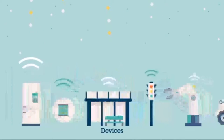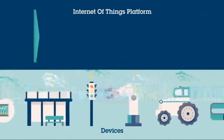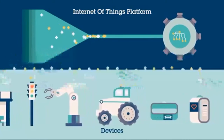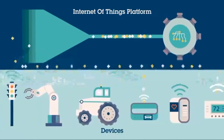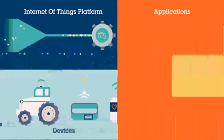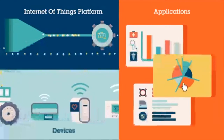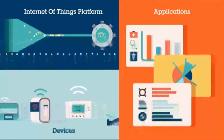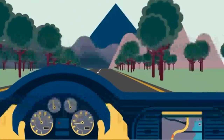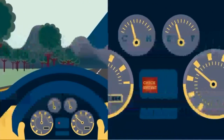The process starts with the devices themselves, which securely communicate with an Internet of Things platform. This platform integrates data from many devices and applies analytics to share the most valuable data with applications that address industry-specific needs. Let's start with a simple example: a car. After taking a long road trip, Rebecca notices that her check engine light has come on.